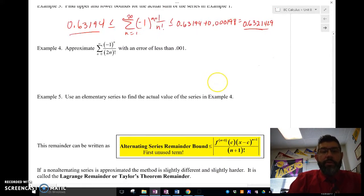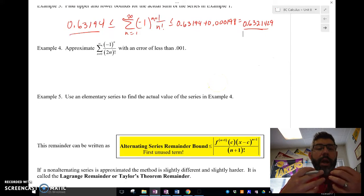So let's go ahead and do another example here. Let's suppose I want to approximate this, the value of this series with an error that's less than 0.001.